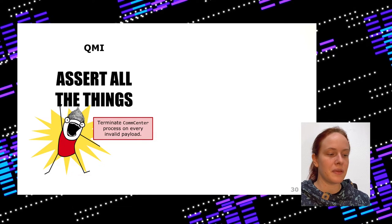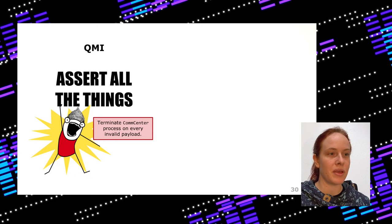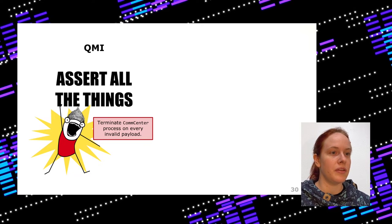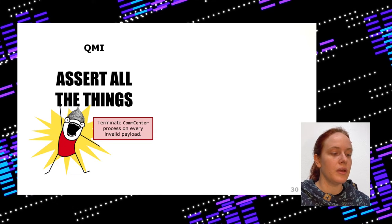QMI code has a lot of assertions — asserting everything about the protocol: the length, the TLV format, and so on. If anything goes wrong it terminates Comcenter. So if you just send one invalid packet, Comcenter is terminated. This doesn't matter a lot if your protocol is stable, since an attack is ongoing and it's valid to terminate. The worst thing that happens when Comcenter crashes during an active phone call is just that the call gets lost or your LTE connection re-establishes — you just feel like your internet connection broke for a short moment.